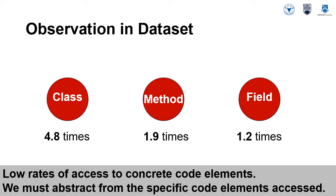Based on the dataset, we observed that developers often work on different parts of the code base. An analysis of the code context models indicates that developers access each code element an average of 4.8 times, each method element 1.9 times, and each view element 1.2 times. These relatively low rates of access indicate that if we wish to build on patterns of access to predict code context models, we must abstract from the specific code elements accessed. We hypothesize that the roles the code elements play in the system are a basis for this abstraction.